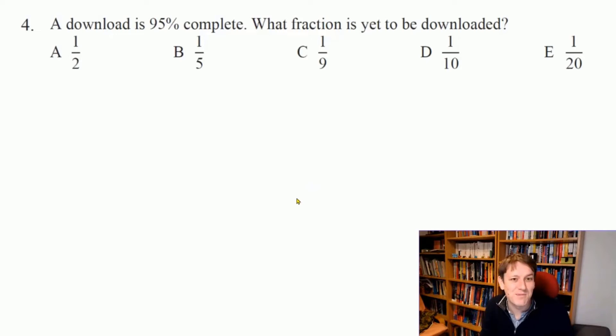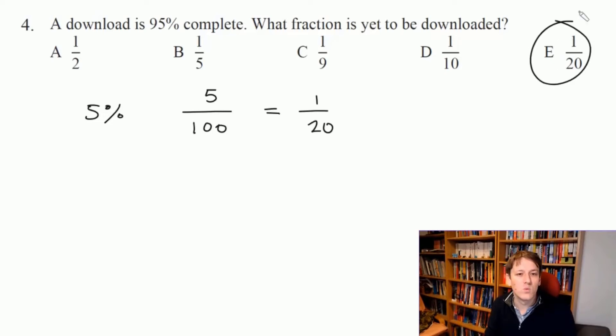So if you're good at fractions you might be able to just write down the answer here, but if a download is 95% complete, what fraction is yet to be downloaded? So 100% minus 95% is 5%, so if I want to write a percentage as a fraction I just put the number over 100, so that's 5 divided by 100, and then we simplify it down. So there's a common factor 5 top and bottom. 100 divided by 5 is 20, so this is 1 over 20 and the answer is E, 1/20th.